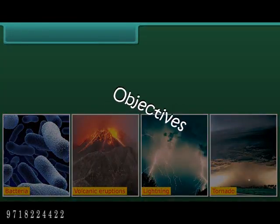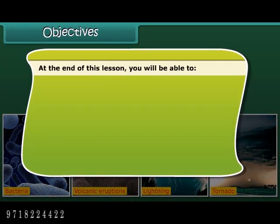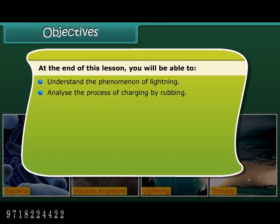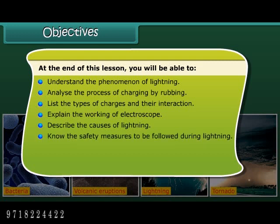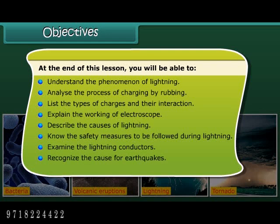At the end of this lesson, you will be able to: understand the phenomenon of lightning, analyze the process of charging by rubbing, list the types of charges and their interaction, explain the working of an electroscope, describe the causes of lightning, know the safety measures to be followed during lightning, examine lightning conductors, recognize the cause for earthquakes, and identify the precautions to be taken during earthquakes.